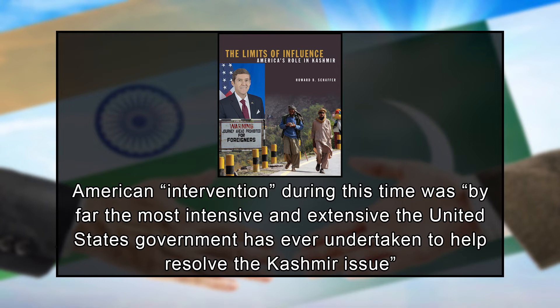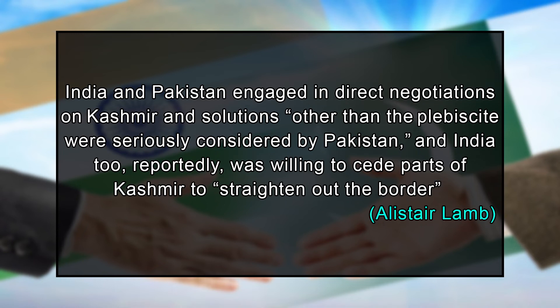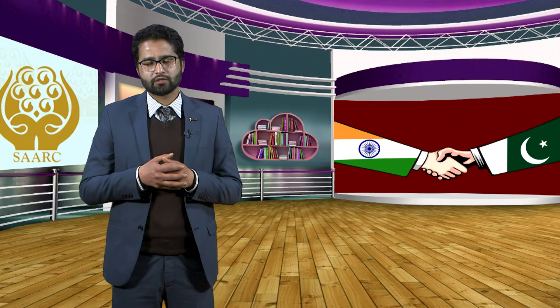According to Alistair Lamb, in 1963 India and Pakistan engaged in direct negotiations on Kashmir and solutions other than the plebiscite were seriously considered by Pakistan. India too, reportedly, was willing to cede parts of Kashmir to straighten out the border. But, like previously, these negotiations also failed.